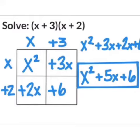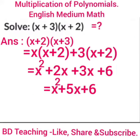Then x multiplied with 3 gives us 3x. Then 2 multiplied with x gives us 2x. Then 2 multiplied with 3 gives us 6. So finally, x² + 3x + 2x + 6 equals x² + 5x + 6. This is the result.